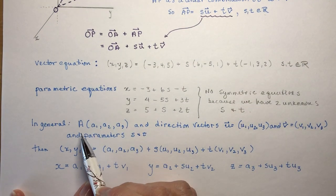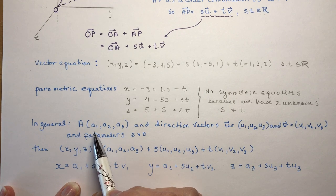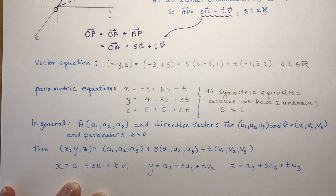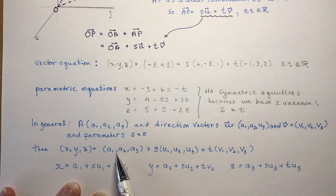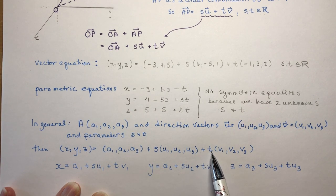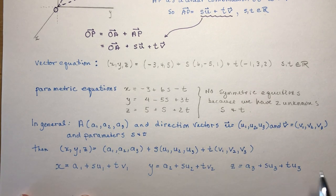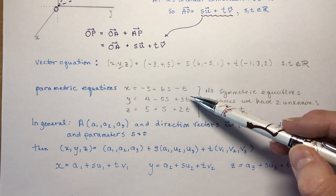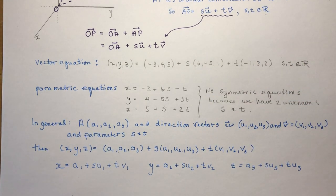In general, if we have point A being (a1, a2, a3) and two direction vectors, then the vector equation of the plane will be the point plus a parameter times the first direction vector plus a parameter times the second direction vector, giving you the parametric equations. That's exactly what we did above. Now let's move on to some examples of the type of questions you're going to have to do.